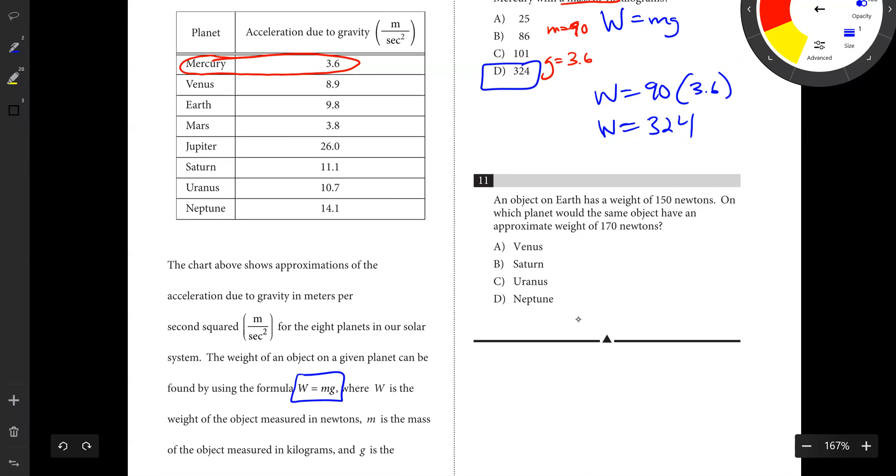Number 11. An object on Earth has a weight of 150 Newtons. On which planet would the same object have an approximate weight of 170 Newtons? We've got to figure out the mass here. We know we're on Earth, the gravity is 9.8. So 150 equals mass times 9.8, so the mass is going to be 15.31.